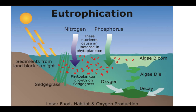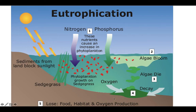Here's a diagram showing that same process. Nitrogen and phosphorus are introduced into the ecosystem, which causes phytoplankton to start growing, eventually leading to an algal bloom, which can actually block sunlight from reaching other plants. Once it dies, the algae will sink to the bottom and start to decay, which requires oxygen and lowers the amount of oxygen in the water, reducing available habitat and food, and ultimately causing the ecosystem to collapse.